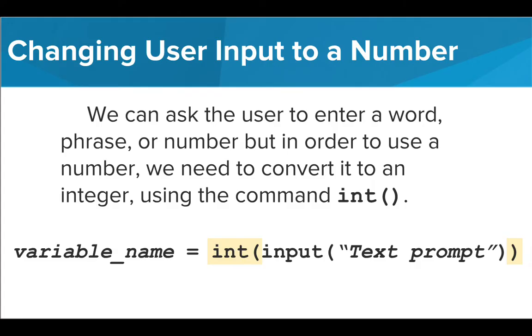If we try to use the input command to get a number from the user and use it as a number in our code, Tracy will give us an error. This is because Tracy reads everything a user enters as a word by default. It's very simple to change a user's input to be read as a number by using the command int. All we need to do is surround our entire input command by the term int and place parentheses around it. You'll notice two closed parentheses at the end of the phrase. This is because we open two parentheses throughout our phrase, so we need to make sure to close both of them or Tracy will respond with an error.